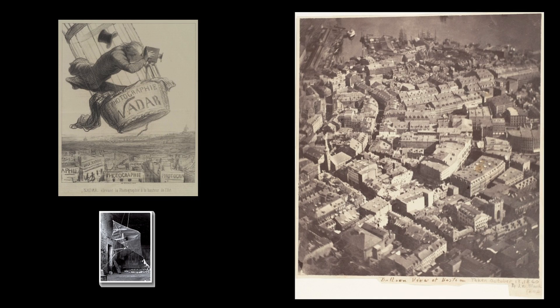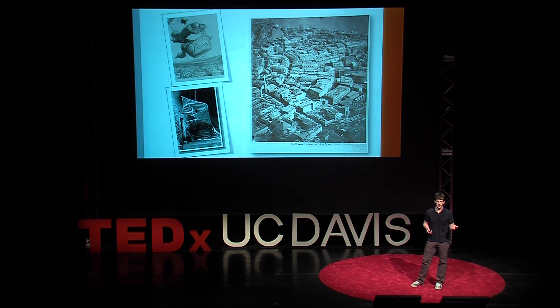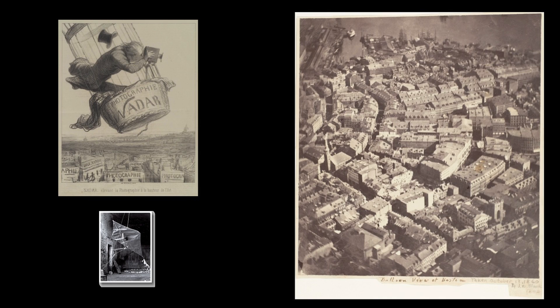Aerial photography and aerial imaging started in the late 19th century. It started with balloons and kites. Today we're going to talk about using balloons and kites in the digital age of map making. This is the oldest surviving aerial photograph — it's a view of Boston from 1860.